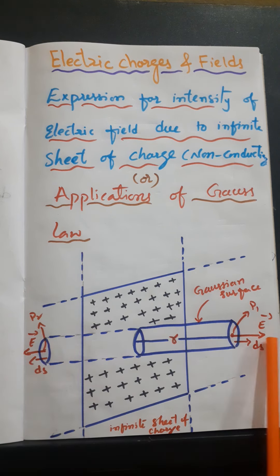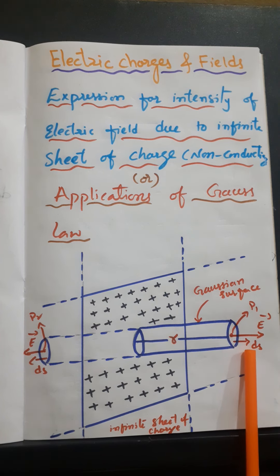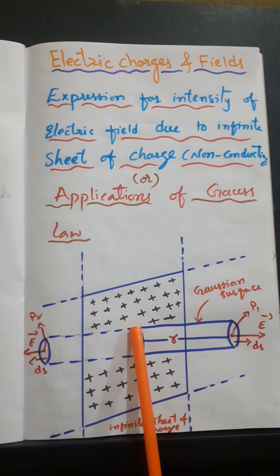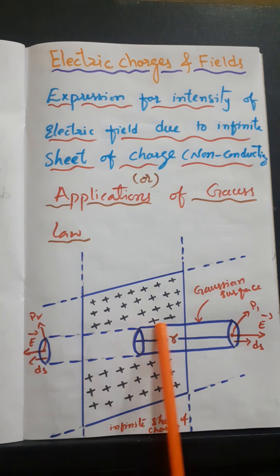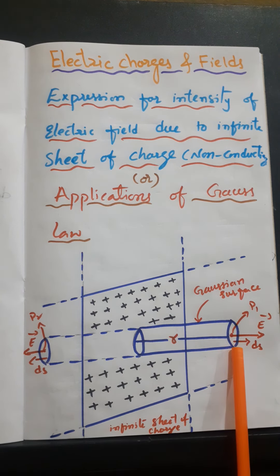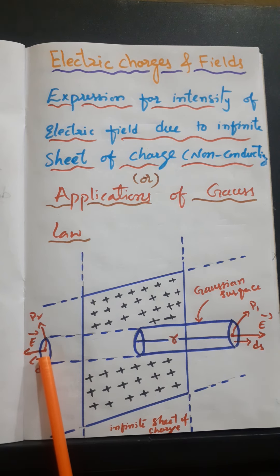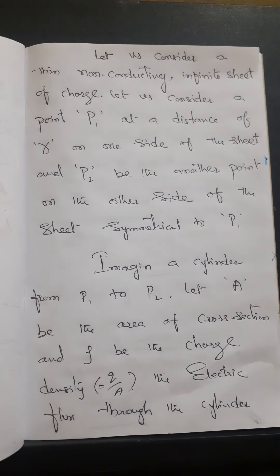At points P1 and P2, the electric field and the area vector are parallel. At the curved surface of the cylinder, the electric field and area vector are perpendicular, so cos 90° = 0 — meaning the electric flux at that position is zero. But the intensity of the electric field at both the caps will be maximum. So our aim is to calculate the intensity of the electric field at both the caps of these symmetrical points.